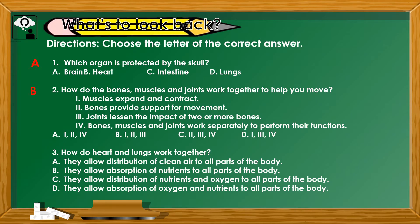Number 3: How do the heart and lungs work together? A. They allow distribution of clean air to all parts of the body. B. They allow the absorption of nutrients to all parts of the body. C. They allow distribution of nutrients and oxygen to all parts of the body. Or D. They allow absorption of oxygen and nutrients to all parts of the body. The correct answer is Letter C.